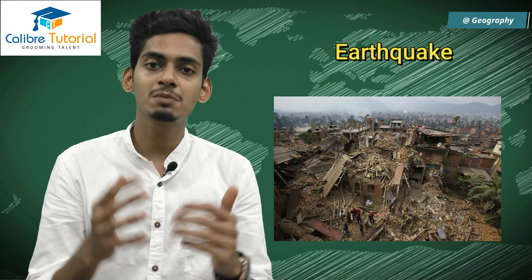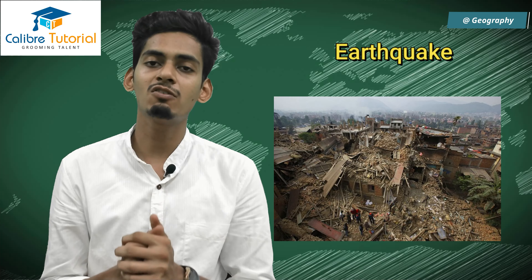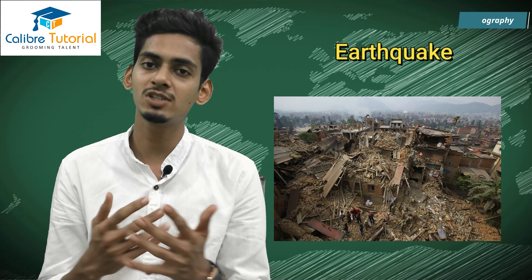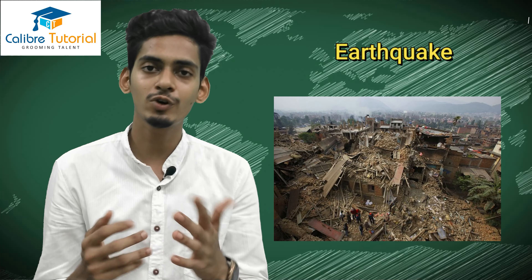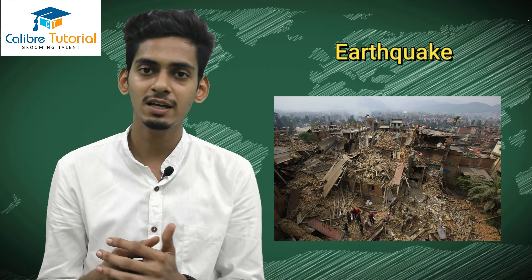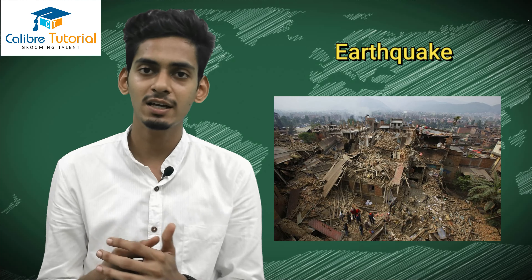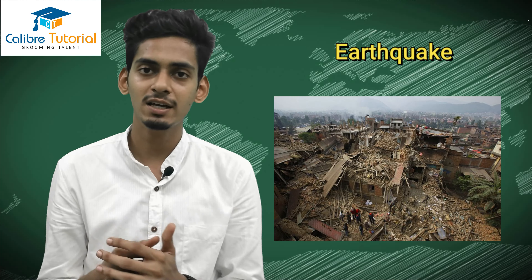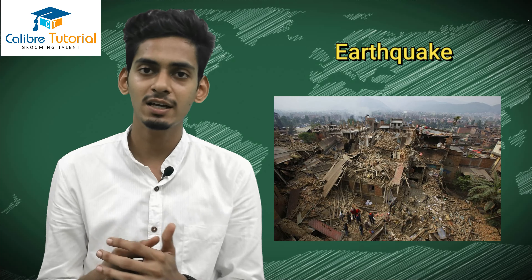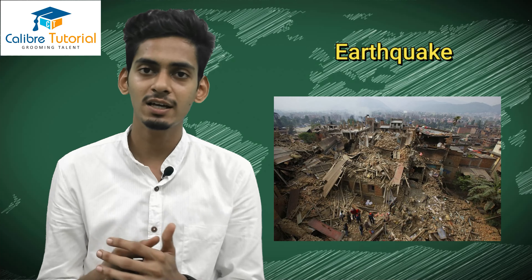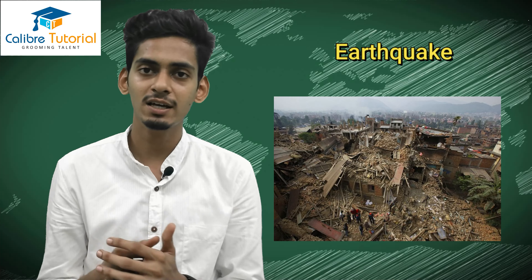We categorize endogenetic movements into two categories: slow movements and sudden movements. The slow movement is diastrophism, which has two forces — one is horizontal and one is vertical. Vertical forces are called epeirogenic, and horizontal forces are called orogenic.